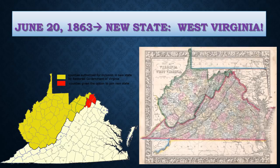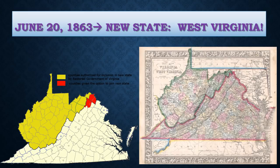On June 20th, 1863, West Virginia became a new state. Poor farmers in the West did not own slaves and most were against slavery. They did not agree with Virginia's decision to secede from the Union in 1861, so the western counties joined the Union. They petitioned Washington D.C. to let them form their own state called West Virginia, and in June the federal government added West Virginia as a Union state.